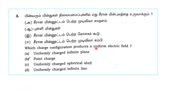Next question: which charged configuration produces a uniform electric field? The infinite charged conducting sheet has field 2 sigma over epsilon-zero. The charged infinite plane sheet has field sigma over epsilon-zero. Point charge and line charge distributions have non-uniform fields.